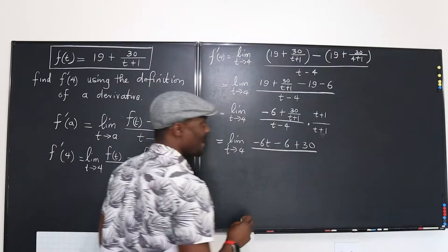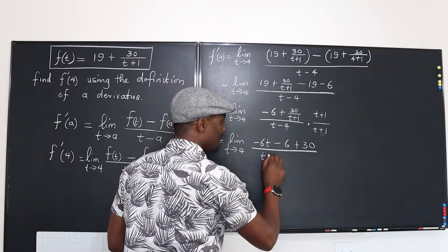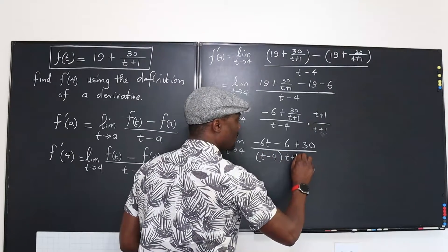Now, divided by, this is going to be t minus 4 and this is going to be t plus 1.